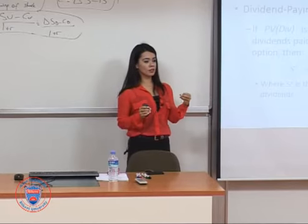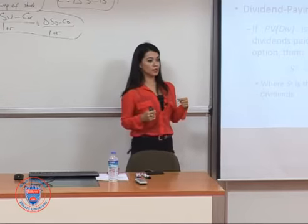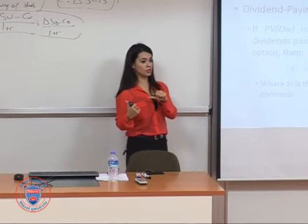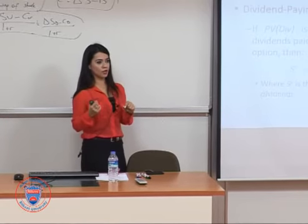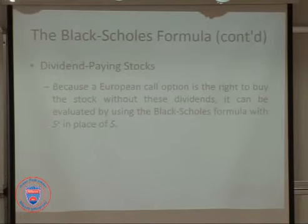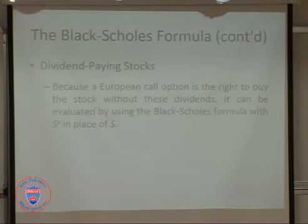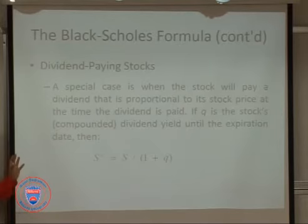Why? Because if a stock is paying dividends, at the ex-dividend date the stock price will decrease, which will be a bad thing for the call option holder. So in this case we need to deduct the present value of the dividend payment from the stock price, and the rest of the formula is not going to change.